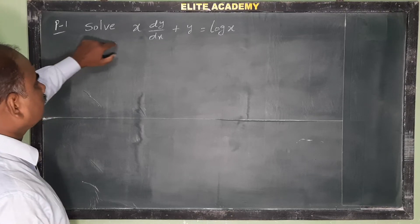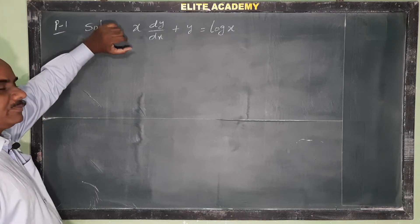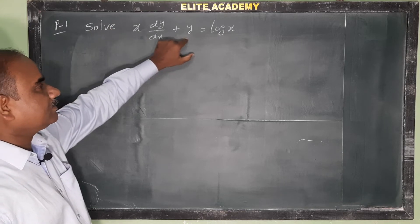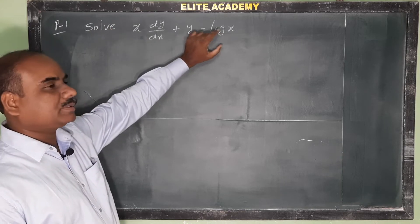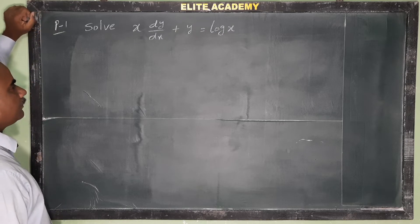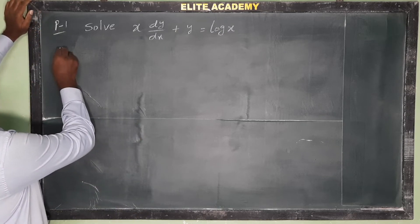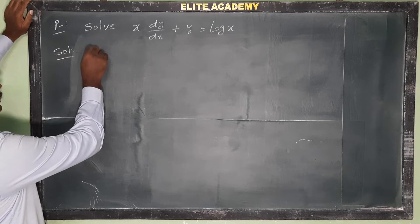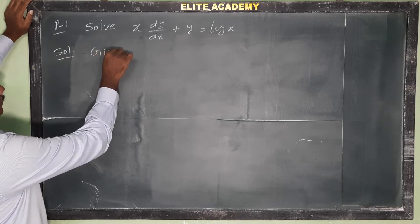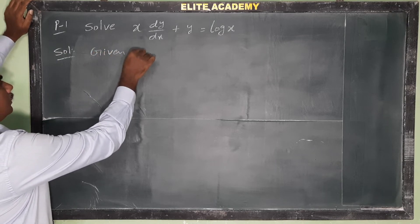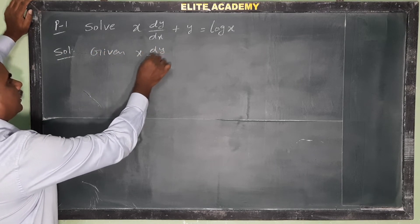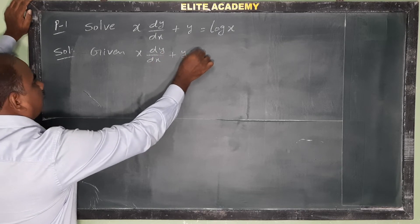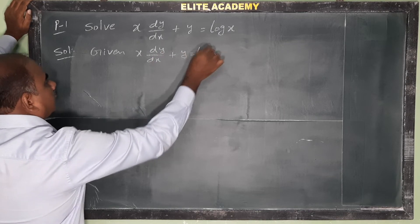Okay, let us see problem 1: linear differential equation in terms of y. x into dy by dx plus y is equal to log x. So, this is the differential equation we have to solve. Solution: first of all write the given differential equation x into dy by dx plus y is equal to log x.